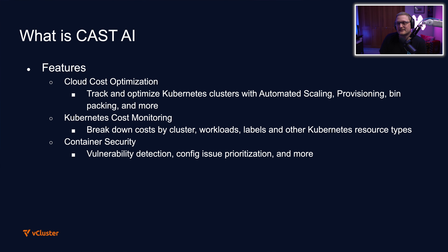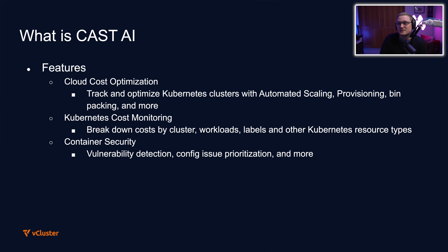CastAI is a little bit different — it has some of the same features but goes a bit further. For cloud cost optimization, it tracks and optimizes Kubernetes clusters with automated scaling, provisioning, bin packing, and more. Using their own algorithms, they figure out how to reduce resource usage by scheduling worker nodes that are cheaper than what you're currently using — think spot instances or changing the size of worker nodes to something smaller if they're not being utilized. They also have Kubernetes cost monitoring that breaks down costs by cluster workloads, labels, and other resource types, plus container security with vulnerability detection and config issue prioritization.